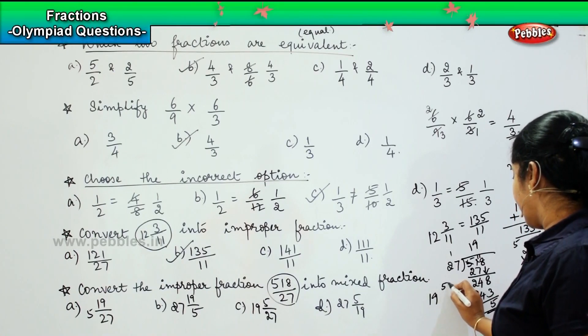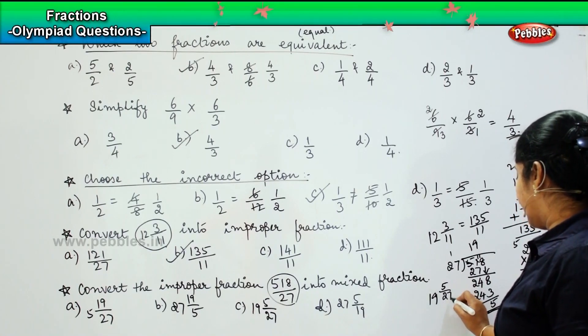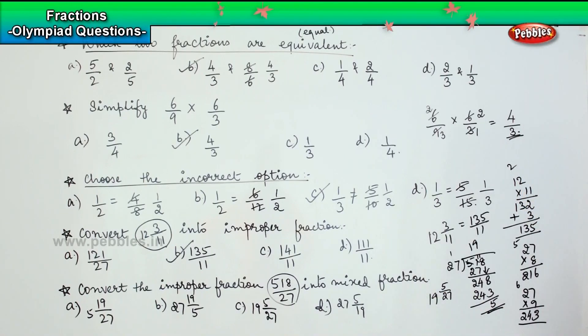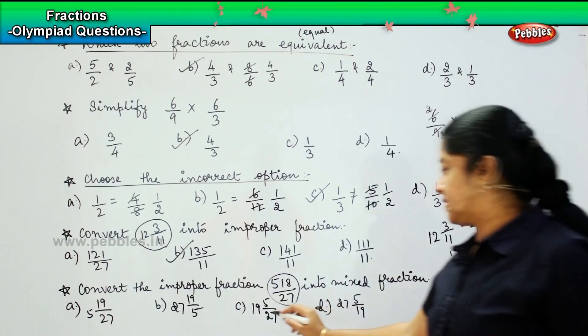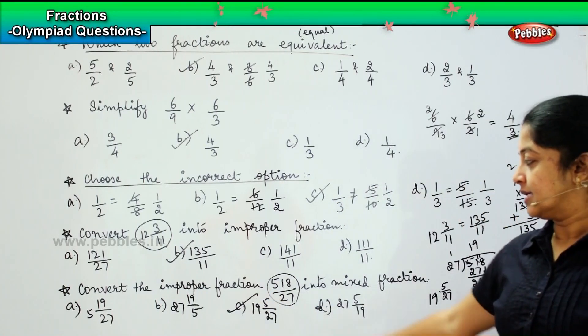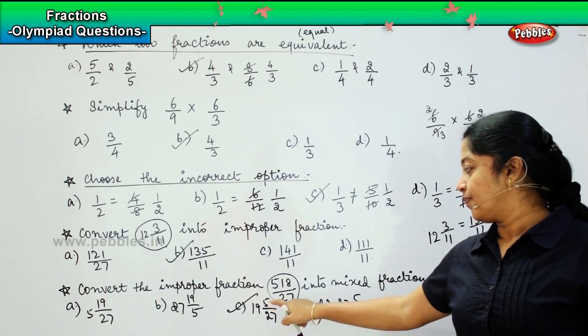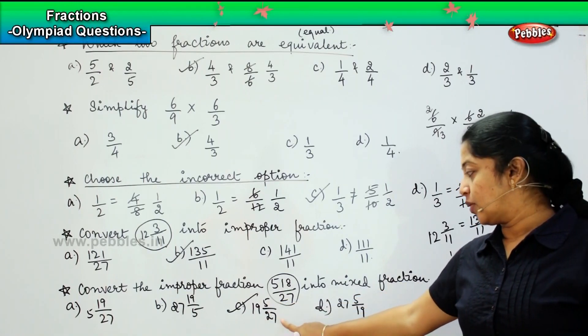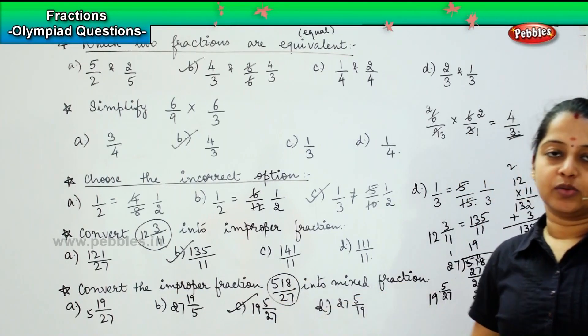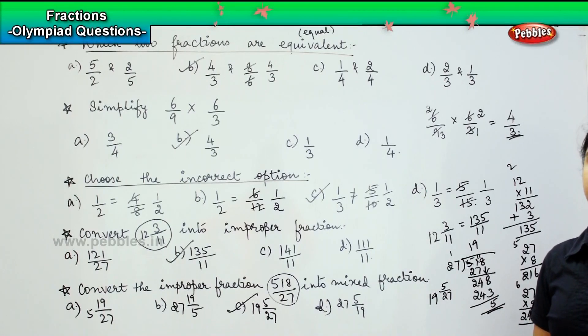This will be written as 19 and 5/27, that is option C. 19 is the quotient value, 5 is the remainder value, and 27 is the divisor value.